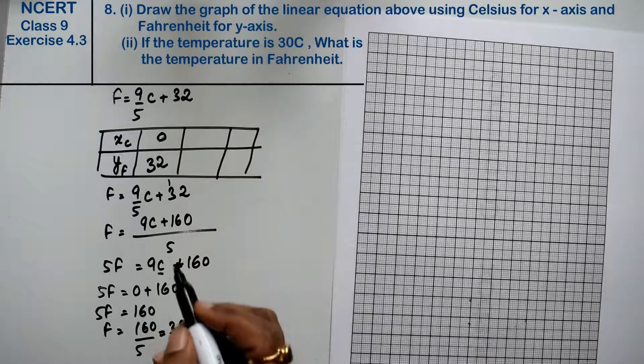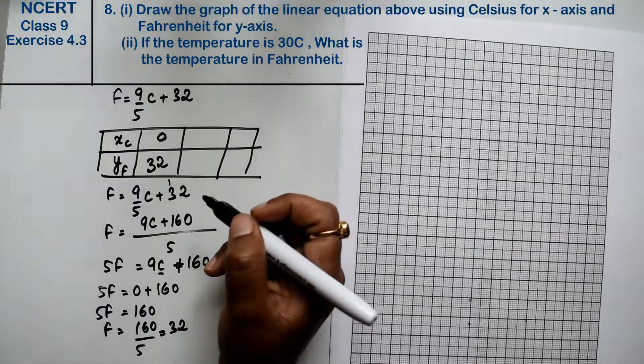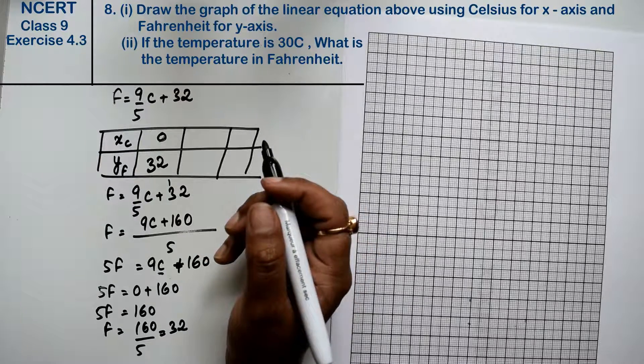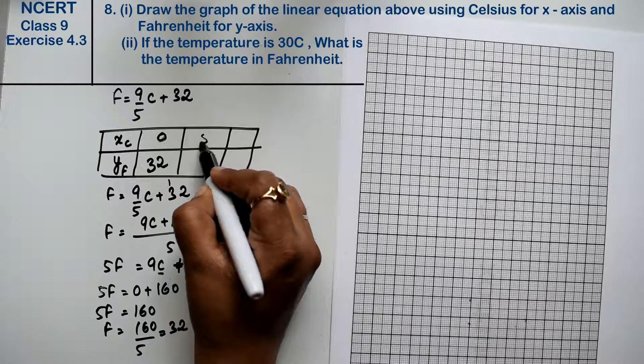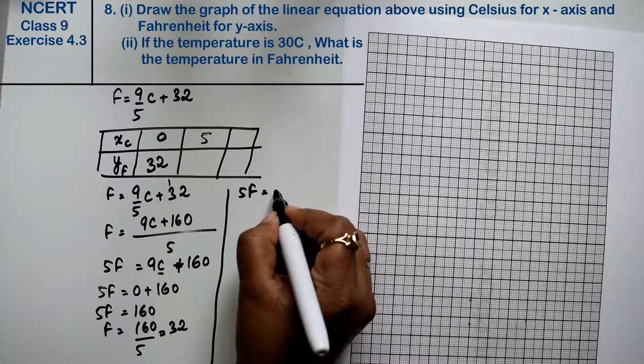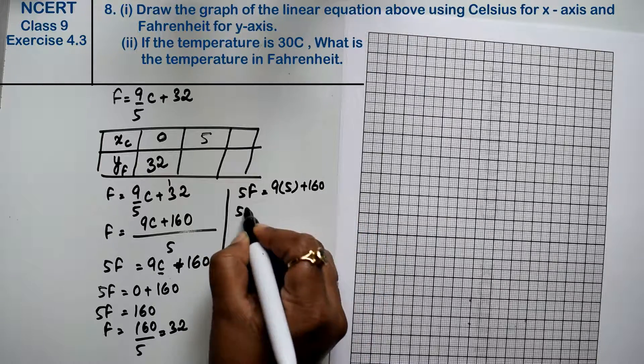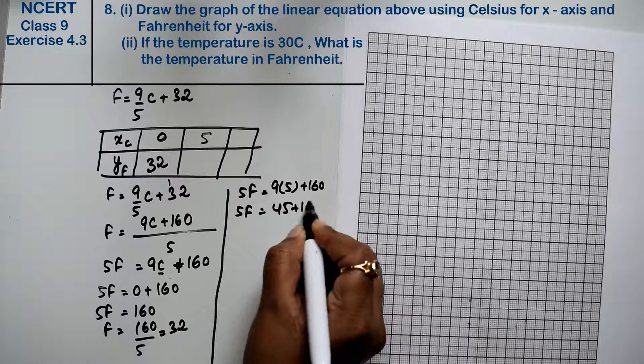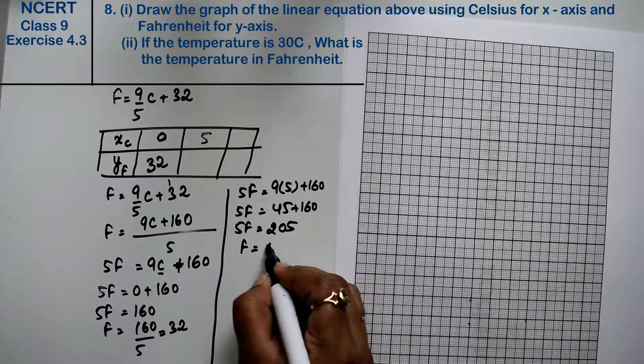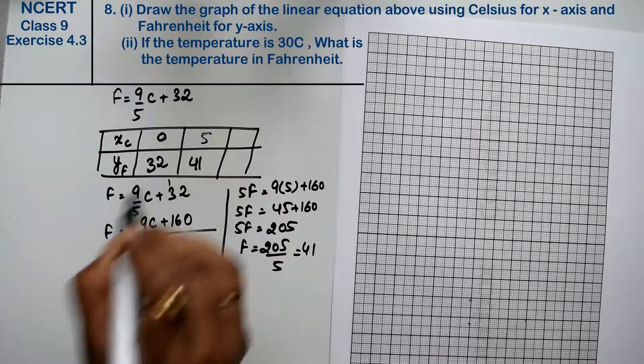If I keep C value 5, then let's see. 5F equals 9 into 5 plus 160. So 5F equals 45 plus 160, 5F equals 205. F equals 205 upon 5, that is 41.